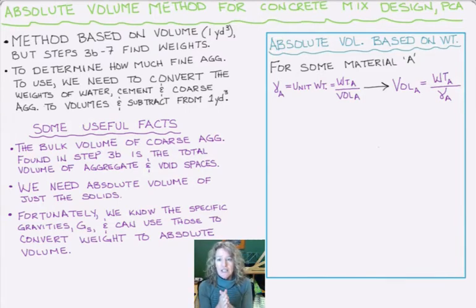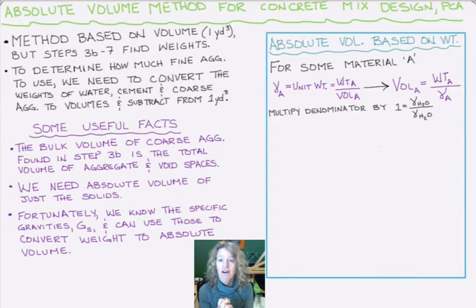Now we want to get a little tricky with that volume formula. We're going to multiply the denominator of the volume formula by one. But our one is going to be the unit weight of water over the unit weight of water.